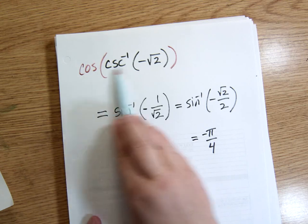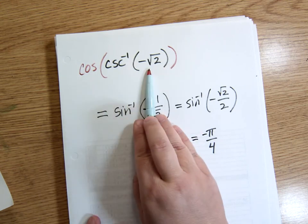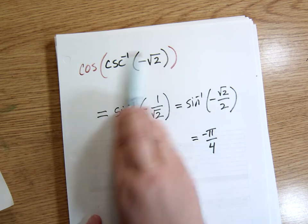If I were given this problem, the cosine of the inverse cosecant of negative root 2, then I would start by doing exactly what I just did, the innermost part.